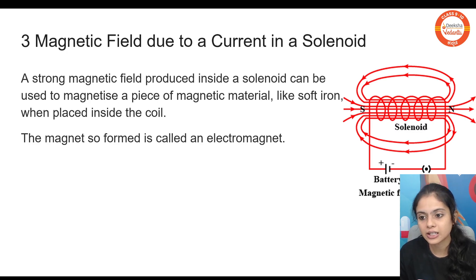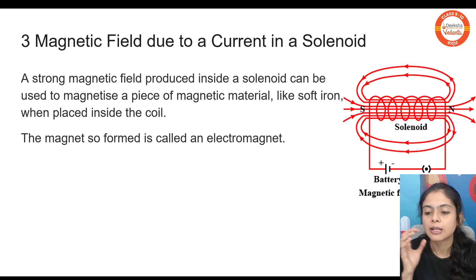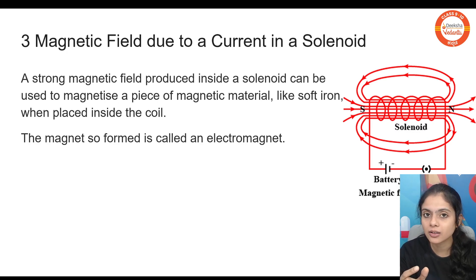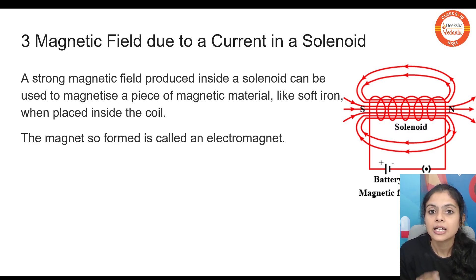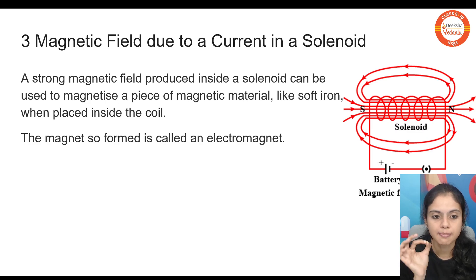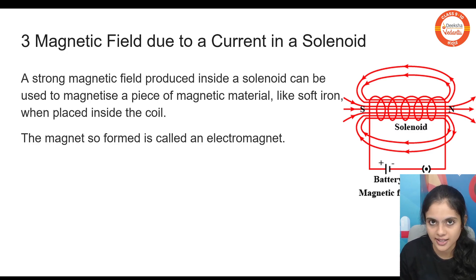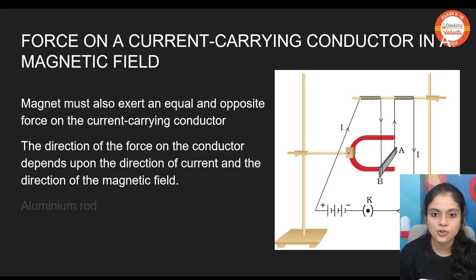Moving forward, we come across the process of magnetization. If you keep a soft iron inside the solenoid, the strong magnetic fields present in the solenoid make that soft iron into a magnet. This process of making a magnet is called magnetization, and the magnet produced this way is called an electromagnet.